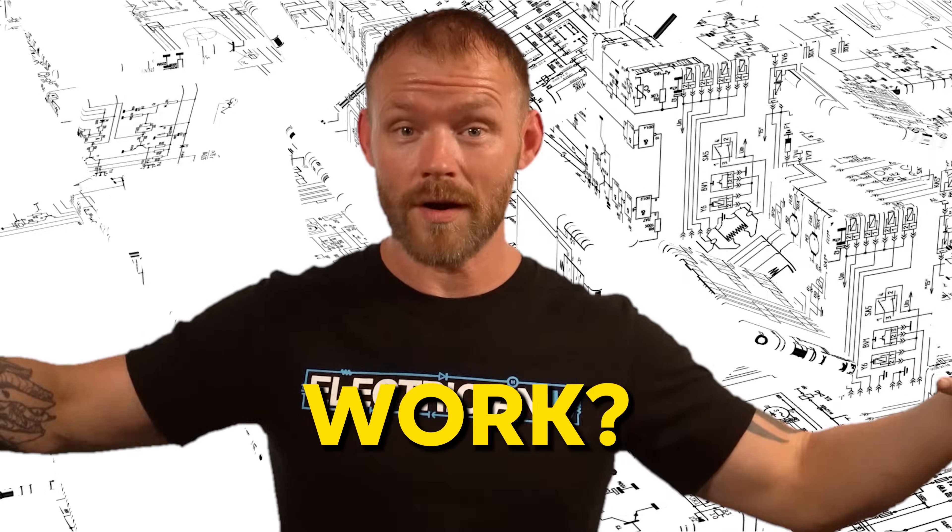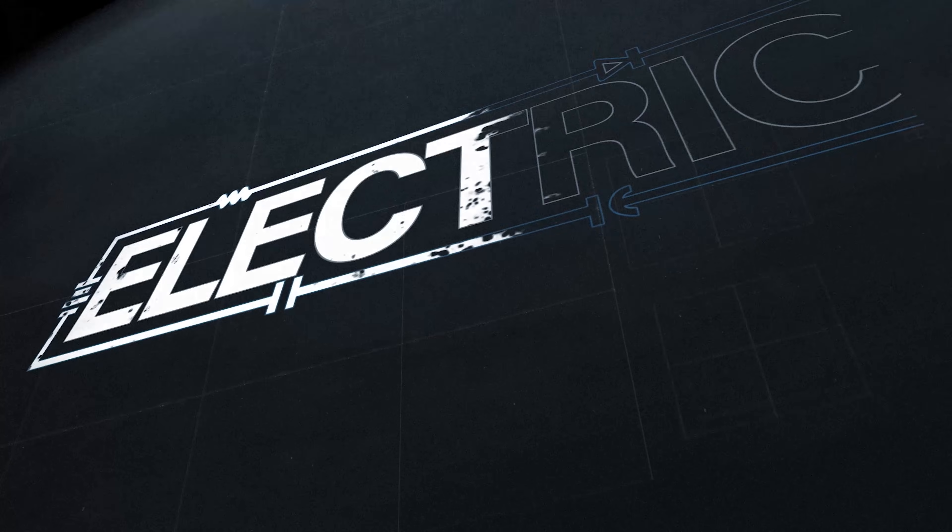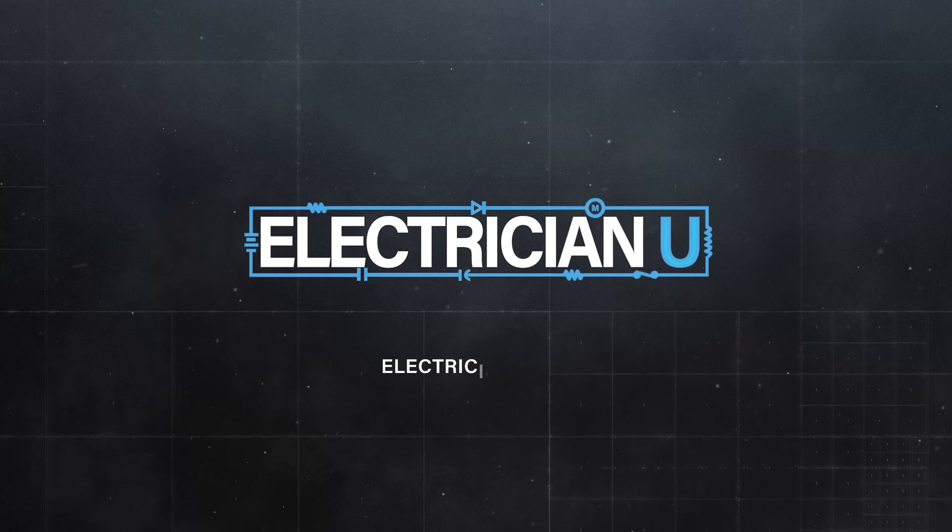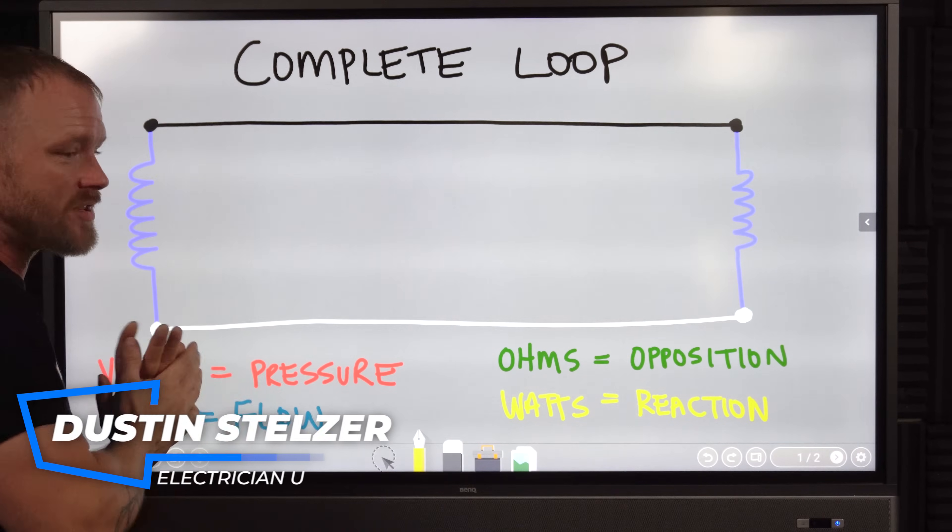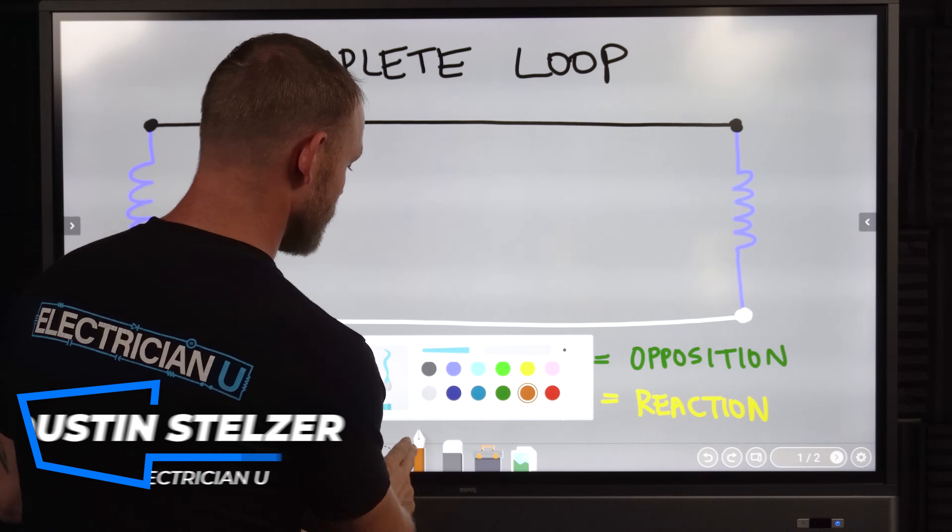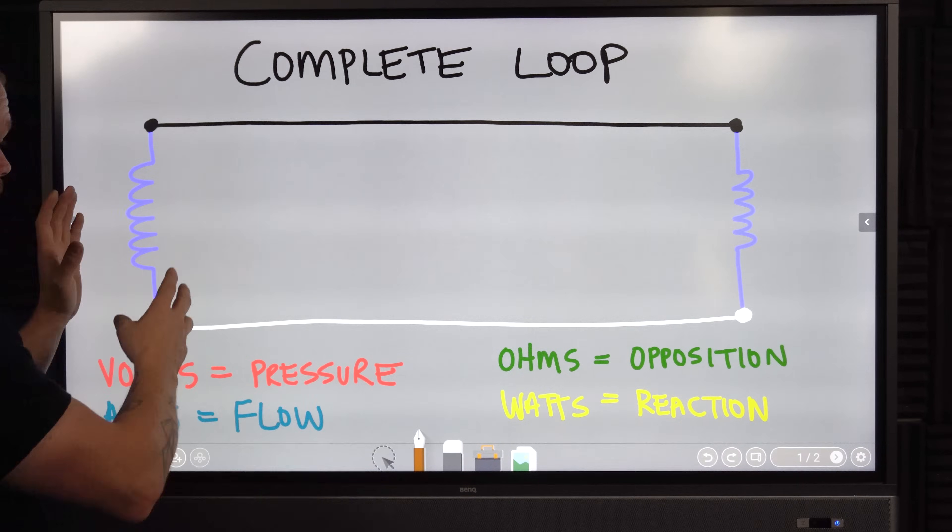What is a circuit and how does it even work? How does electricity work? The most helpful thing to understand is that electricity needs to make a loop. We have a complete loop. This is a circuit.